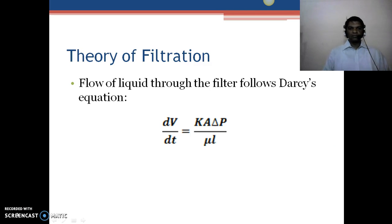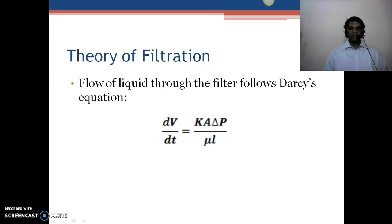Talking about the theory of filtration, there are two to three theories used in the filtration area, like Poiseuille's equation, Kozeny-Carman's equation, or D'Arcy's equation. Talking about D'Arcy's equation, it is dV/dt — that is, the rate of fluid flow — is equal to kA·ΔP, where k is a constant, A is the surface area of the filter media, ΔP is the pressure difference across the membrane, μ is the viscosity of the liquid, and L is the thickness of the filter media.